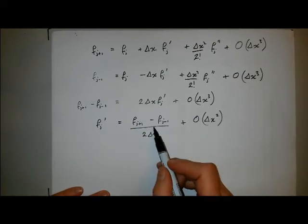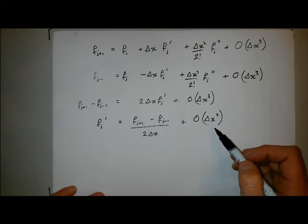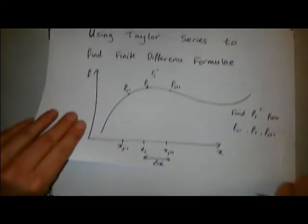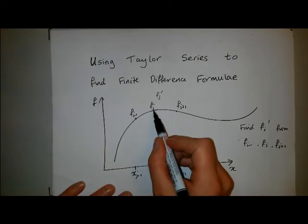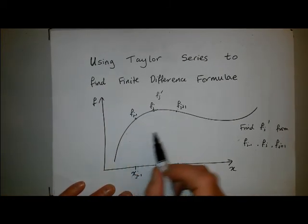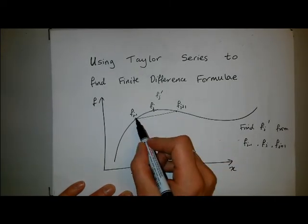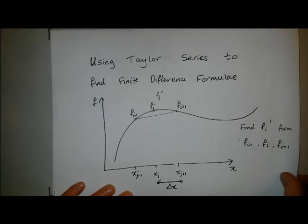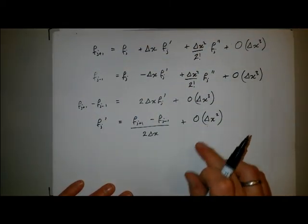It doesn't in fact use f_j, and it's second order accurate. The error is proportional to delta x squared, which is what you'd have guessed. The gradient here is going to be, the best estimate from these, is going to be that minus that divided by twice the distance between them. But using the Taylor series, we can say how accurate it's going to be.